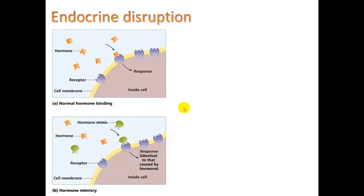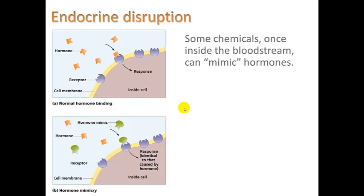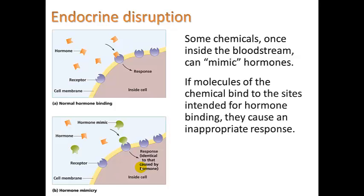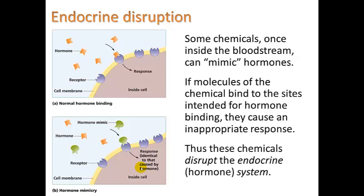Let's take a look at endocrine disruptors. Some chemicals, once inside the bloodstream, can mimic hormones. A hormone is a molecule that attaches to receptor molecules in cell walls and initiates a response by the cell. Some molecules have the same basic shape and are able to fit that receptor and cause an identical response. If molecules of the chemical bind to the sites intended for hormone binding, they cause an inappropriate response and thus disrupt the endocrine hormone system.